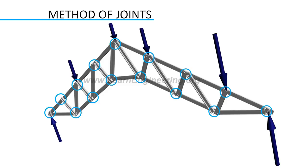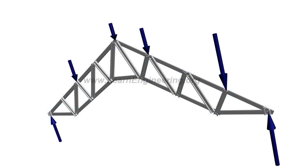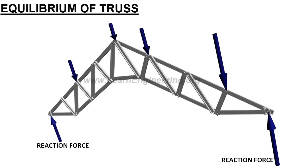The procedure for method of joints is as follows. First step: determination of reaction forces. For this purpose, we can use three equilibrium equations of truss. That is, sum of horizontal force is zero, sum of vertical force is zero, and moment acting at any point in truss is zero.